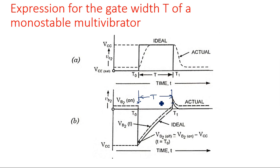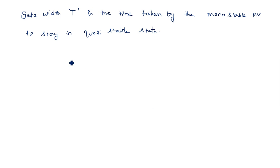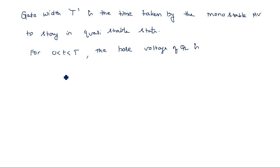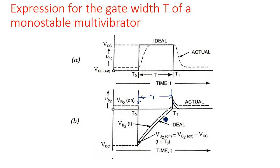During the period 0 < t < T, the base voltage of Q2 can be calculated as follows. For 0 < t < T, the base voltage VB2 can be found using the capacitor charging formula: V_final minus (V_final minus V_initial) times e to the power of minus t by RC — the same formula discussed when covering low-pass and high-pass circuits. V_final is the final voltage up to which the capacitor has to charge, which is VCC.